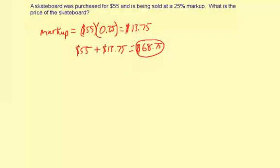Now let's look at using the total percent method. The $55 is 100% of the price, plus the 25% markup. So the new price is 125% of the original price, the $55.